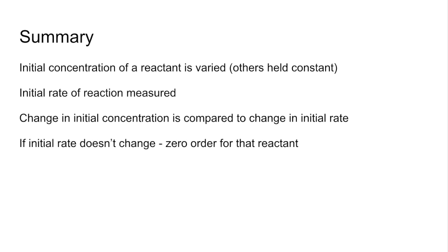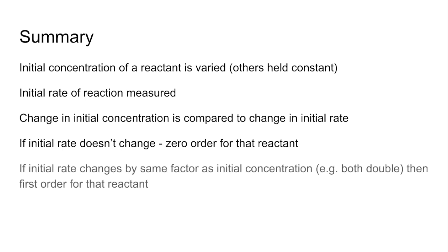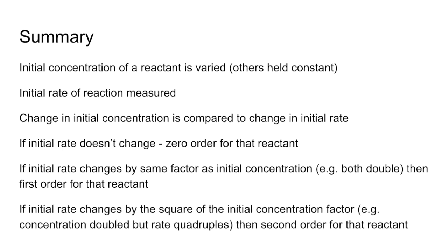If the initial rate doesn't change when you change the concentration, that means it's zero order for that reactant. If the initial rate changes by the same factor as the initial concentration — so they both double, for example — then it's first order. And if the initial rate changes by the square of the initial concentration factor — so if you double the concentration but the rate quadruples — then that's second order for that reactant.